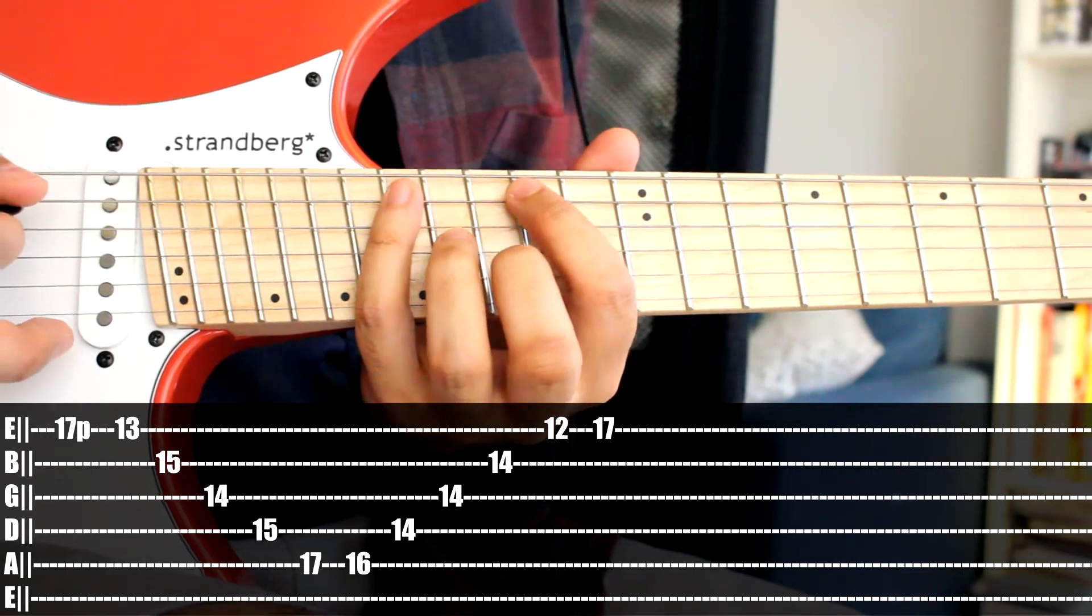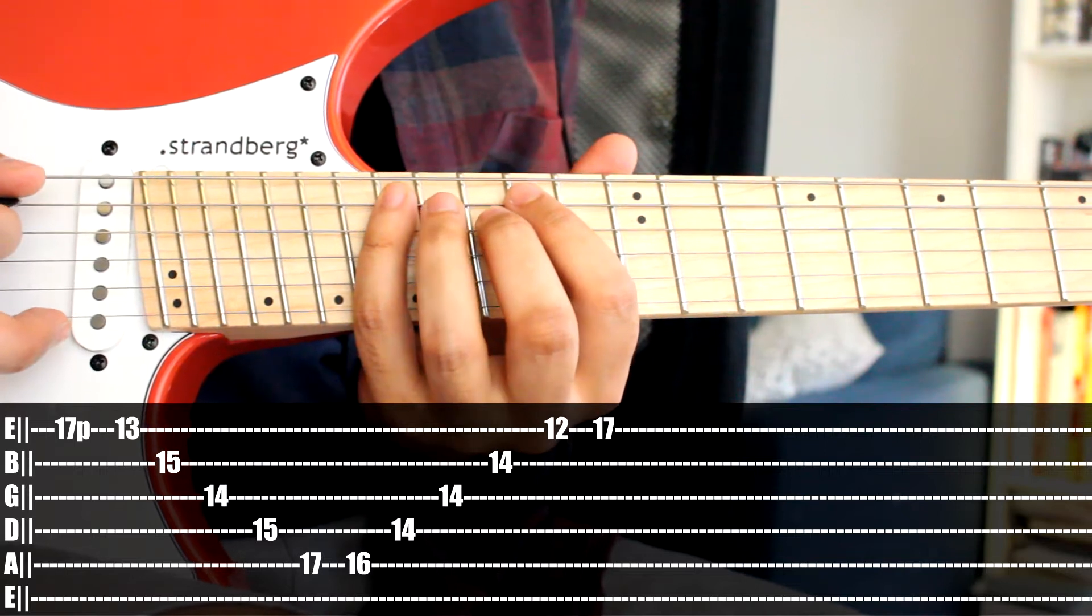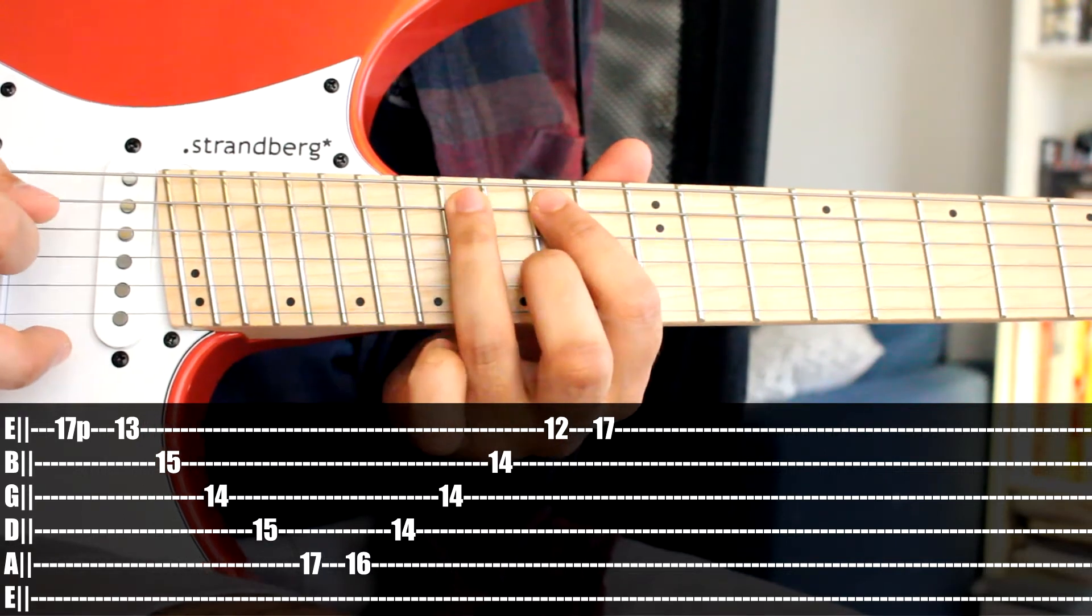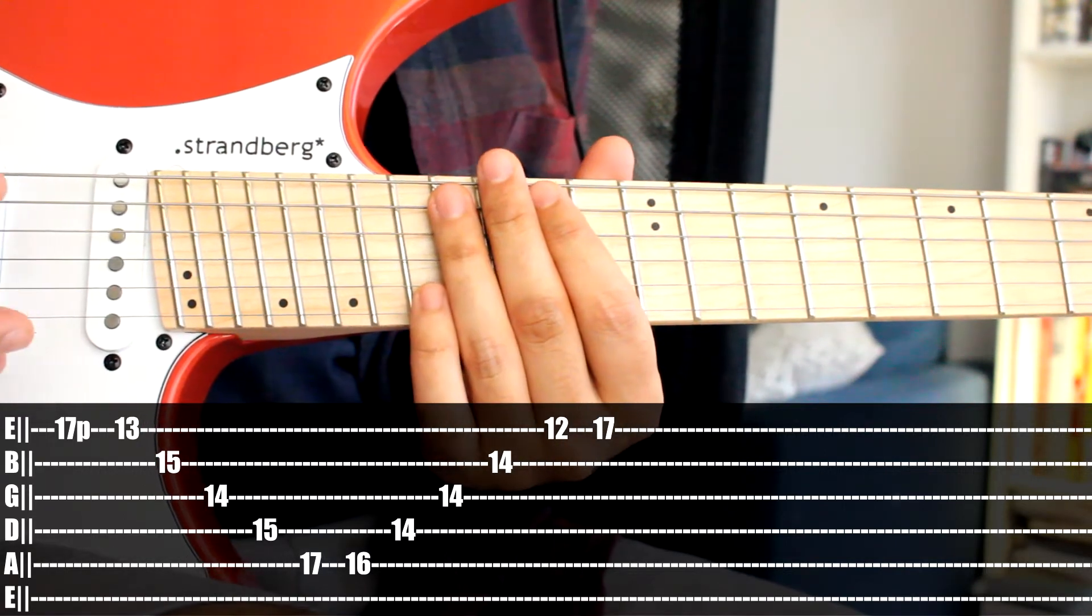Then from that same A string, after the 17 we're picking on the same string, 16 with a down stroke, and then we commence a new picking pattern.